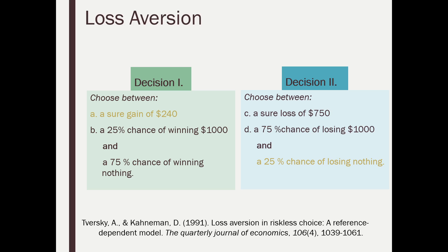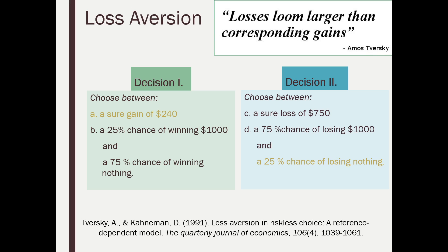What they concluded is that people display loss aversion. Once a sure gain is on the table, the idea of potentially winning nothing is painful. With Decision Two, facing giving away money you already have, people are willing to gamble for the chance of losing nothing. Tversky says 'losses loom larger than corresponding gains.' They were trying to rationalize why decision-makers can't see these as the same problem, and ultimately realized people are loss averse — they want to keep what they have.